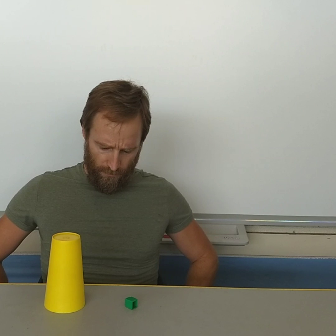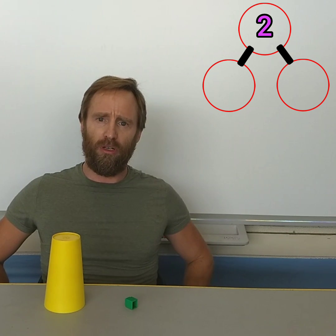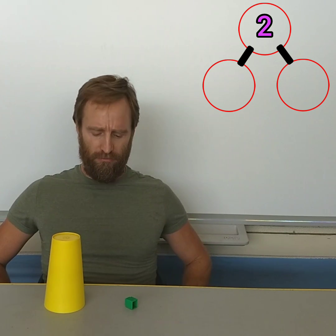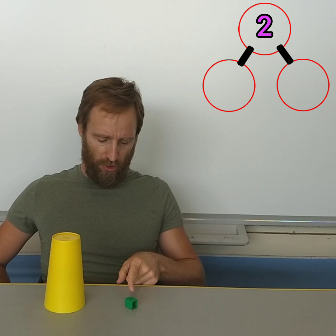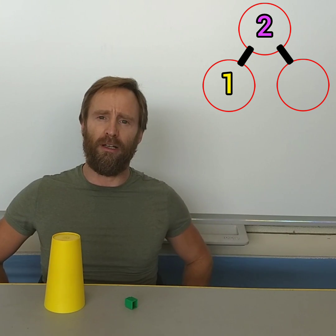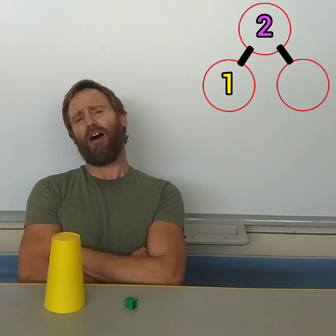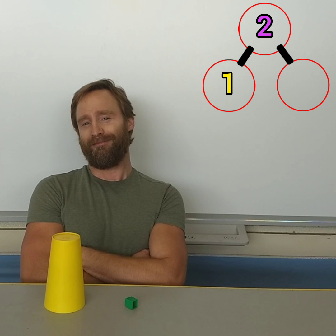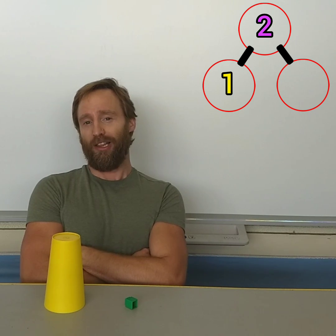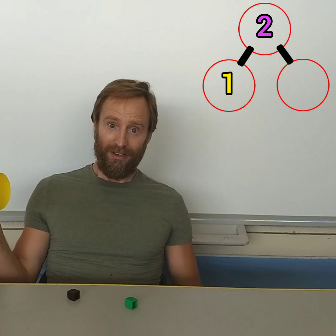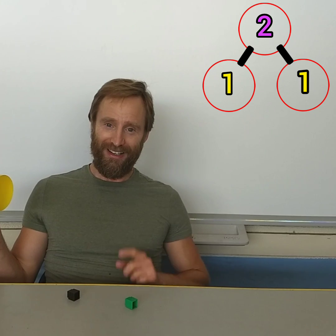There were two cubes. Now how many do you see? Looks like there's one cube there, the green one. So how many are under the cup? Let's look. Did you say one? You are right.